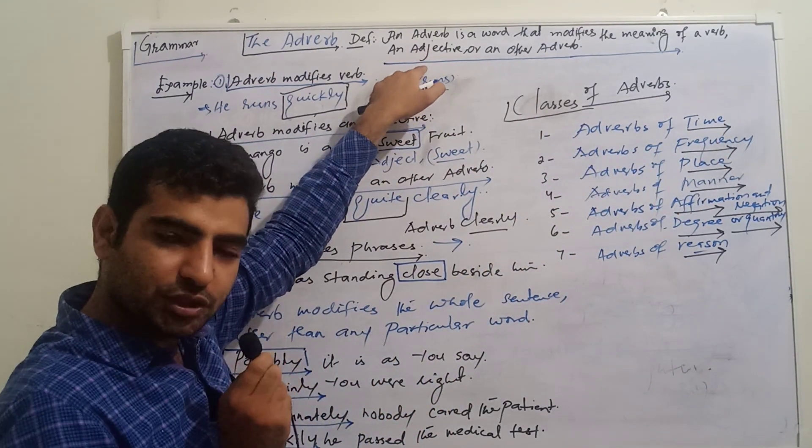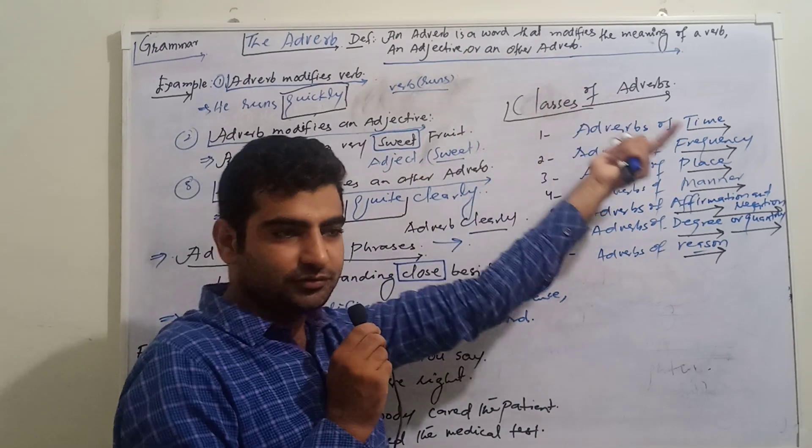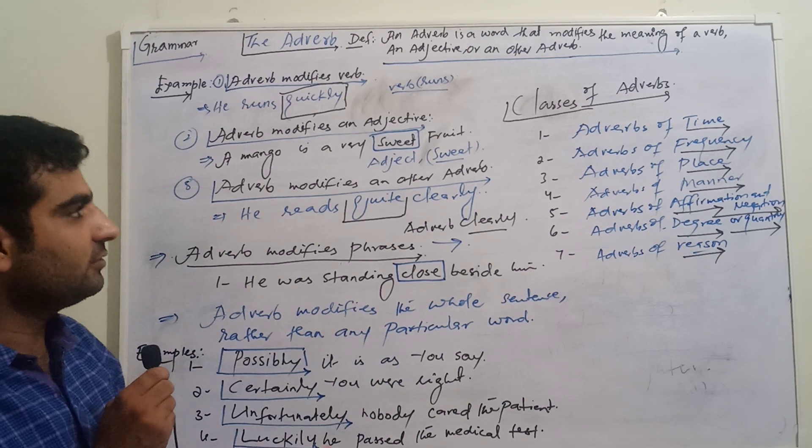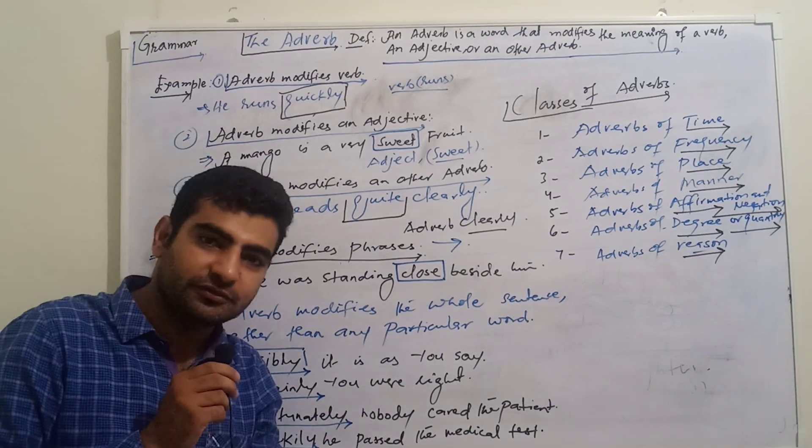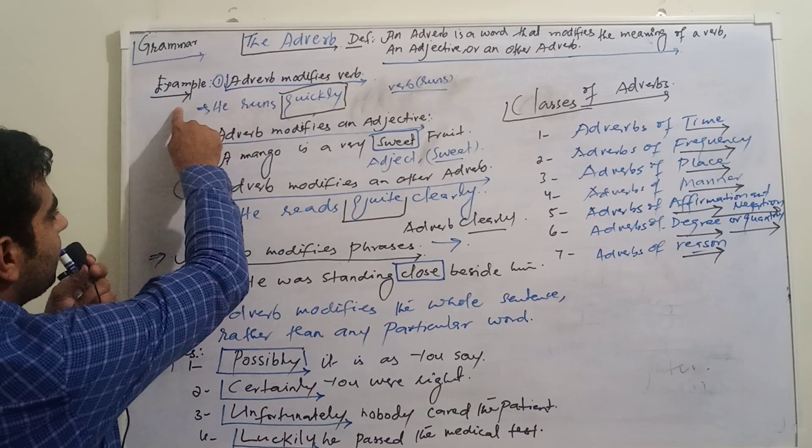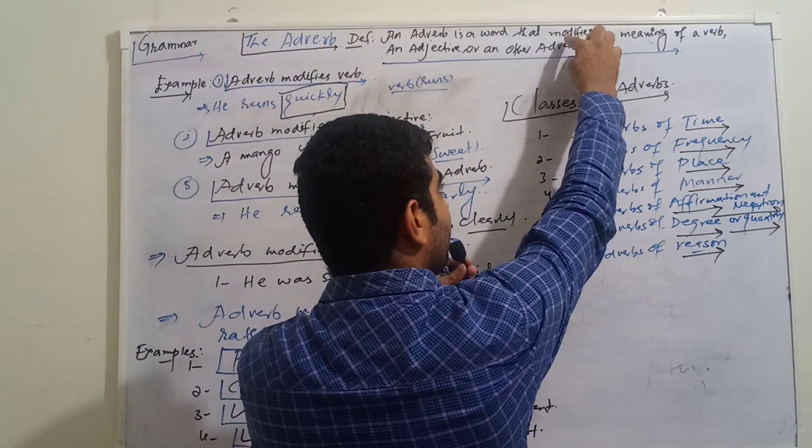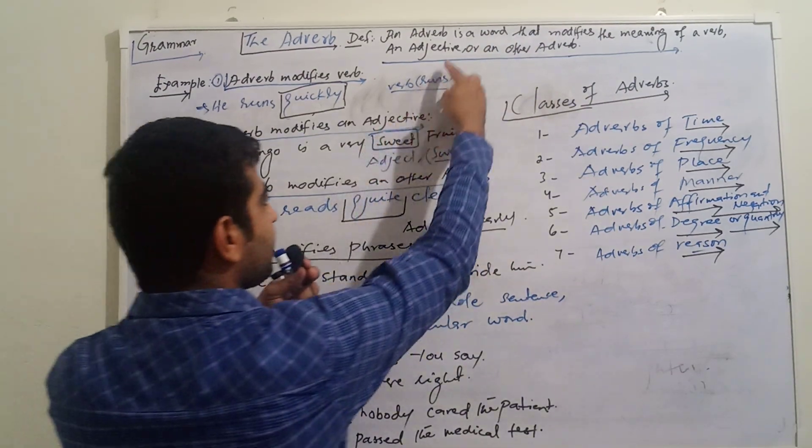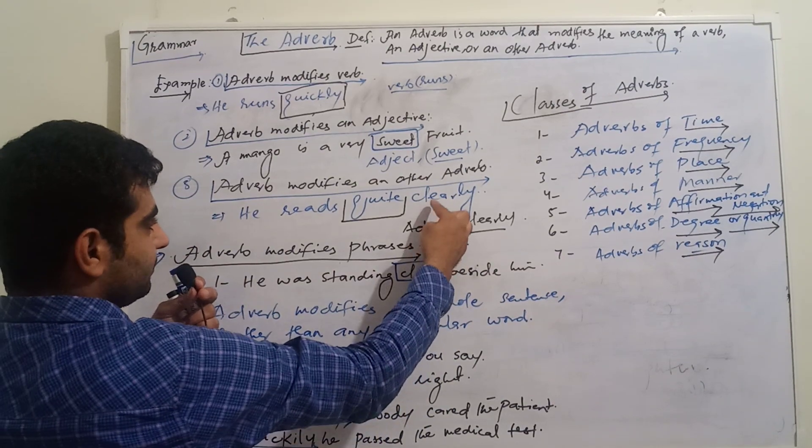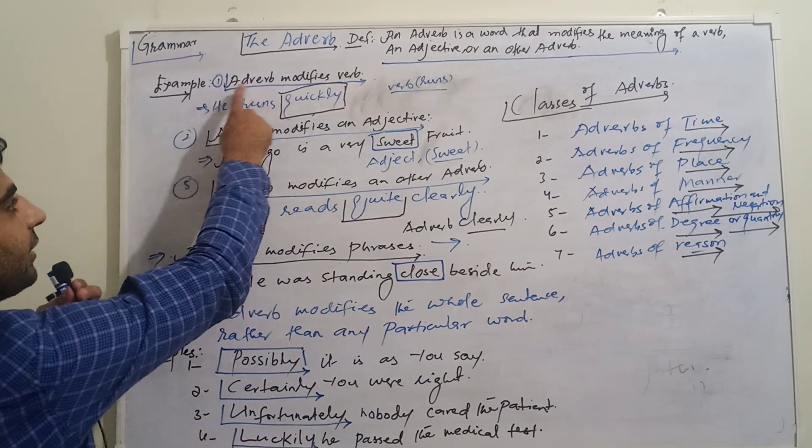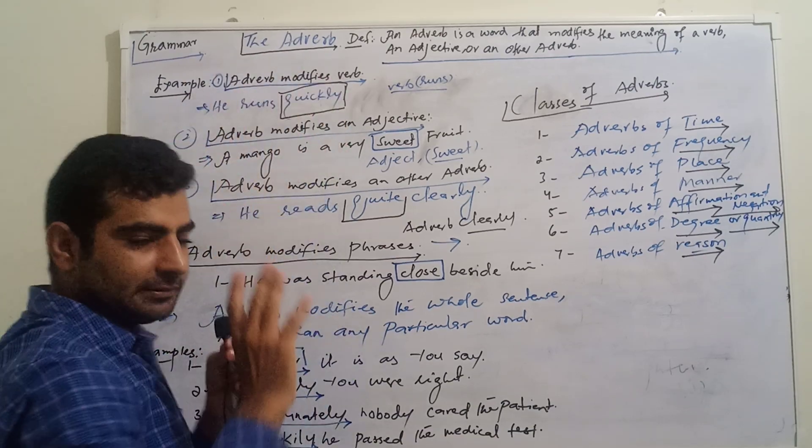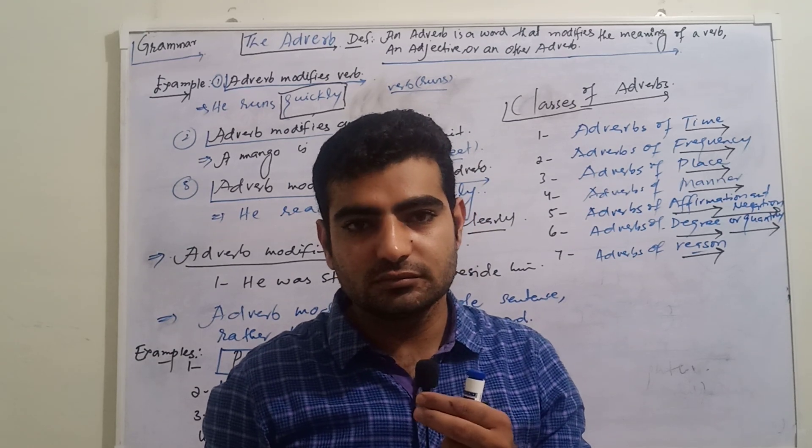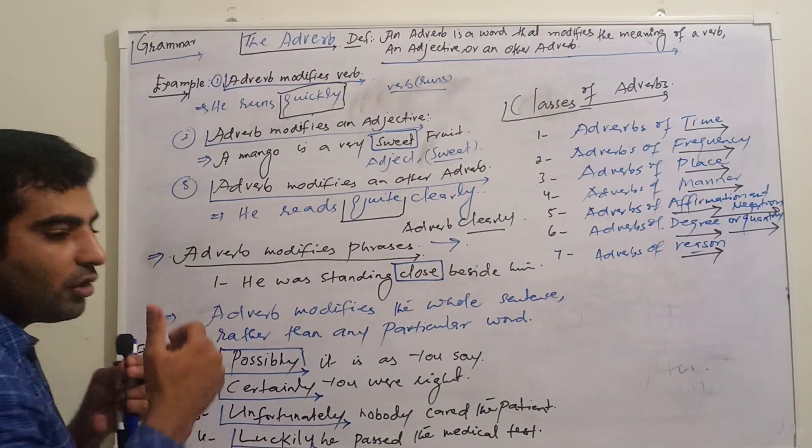We can add something with a verb, with an adjective, or with another adverb. For example, adverb modifies verb - it modifies the verb, the adjective, and another adverb. We will discuss one by one. Adverb modifies verb: how? He runs quickly. He rides fast. Likewise, he walks carefully.